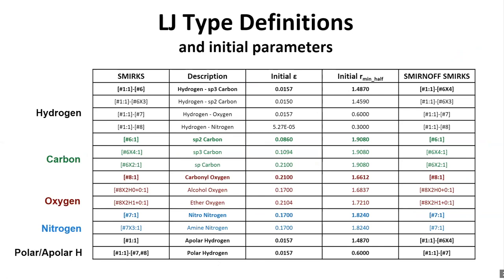The SMARTS patterns used for the typing schemes are available in the paper, essentially taking top-level SMARTS strings. The discussion concluded that repeating whatever fitting is being done for the 1.2 release with one or two of these minimal typing schemes — to see what works best — would be a larger-scale version of the same experiment, and would be fascinating to pursue.